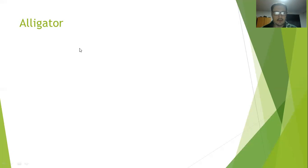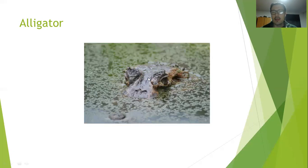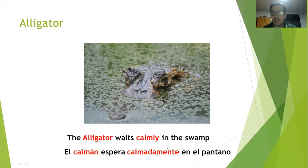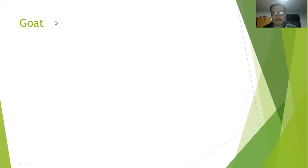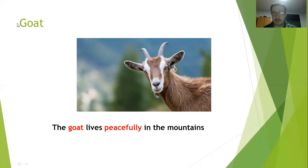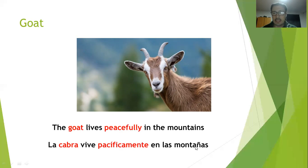Number four: alligator. Alligator in Spanish is caimán. The example: the alligator waits calmly in the swamp — el caimán espera calmadamente en el pantano. Alligator/caimán, calmly/calmadamente. Number five: goat is cabra. The example: the goat lives peacefully in the mountains — la cabra vive pacíficamente en las montañas. Goat/cabra, peacefully/pacíficamente. As you can see, most adverbs end in '-ly'.